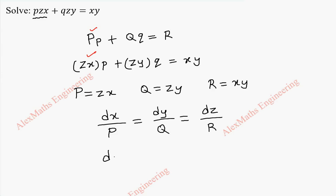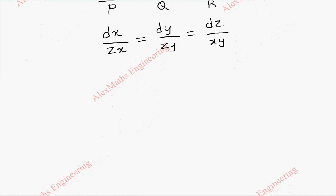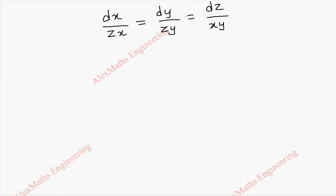From this, dx by zx equal to dy by zy equal to dz by xy. By taking two terms at a time, that is taking the first and second, then second and third, we are going to get the solution. Writing the first and second, we get dx by zx equal to dy by zy. After cancelling this, it is of the variable separable form. On integration, we get log x equal to log y.